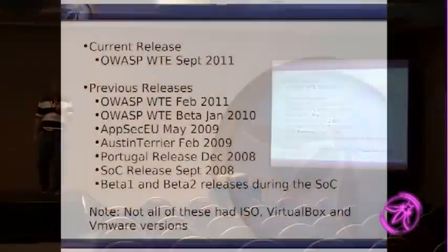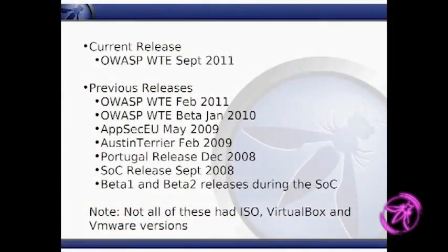Since then I've had a few more releases: 2.108, 2.109, 1.10, and now version 2 this year. Starting after AppSec EU — actually I did it for the AppSec EU release as well — not only did I produce an ISO image, but I started making VMware and VirtualBox images.